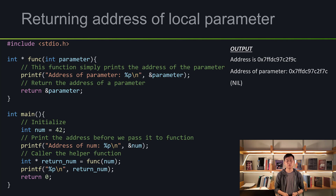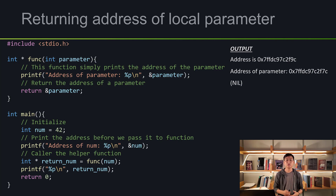Let's look at the first example, which is about returning the address of a local parameter. As you can see in the code, I made a helper function called func. It takes a parameter called parameter, which is int type. What this helper function does is it simply prints out the address of the local parameter and returns that address.